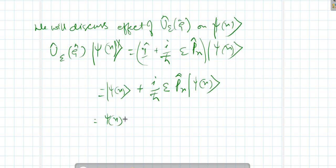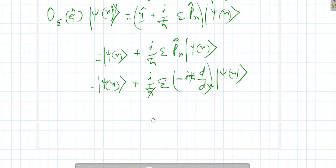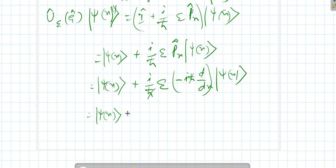Psi(x) plus iota over ℏ epsilon, and the value of this momentum operator which we have substituted here. This ℏ will cancel out with it and iota squared will become minus one, and minus minus will become plus one. So therefore this will become psi(x) plus epsilon d psi(x) over dx. So this can be written now in this form.